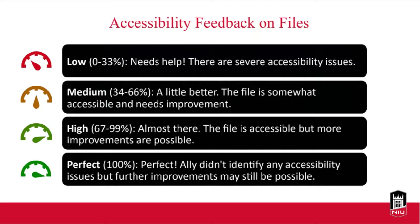Here's what the accessibility feedback on files means. A red gauge means low accessibility — there are severe issues that might impact students accessing the material. Medium is an orangey burnt-orange color, meaning 34–66% accessibility issues. High means you're almost there — the file is accessible but more improvements are possible. A perfect score of 100% means Ally didn't identify any accessibility issues, though further improvements may still be possible, as Ally doesn't catch everything.